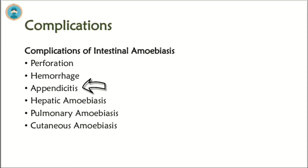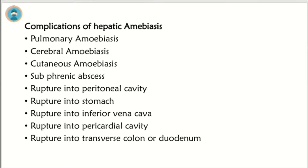Complications of intestinal amoebiasis include perforation, hemorrhage, appendicitis, and hepatic, pulmonary, and cutaneous amoebiasis. Complications of hepatic amoebiasis include pulmonary, cerebral, and cutaneous amoebiasis, subphrenic abscess, rupture into the peritoneal cavity, rupture into the stomach, rupture into the inferior vena cava, rupture into the pericardial cavity, and rupture into the transverse colon or duodenum.